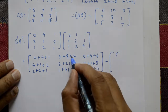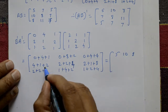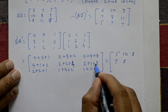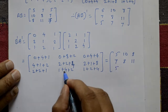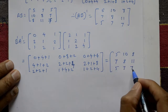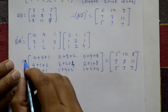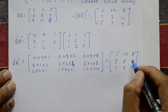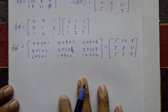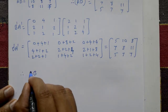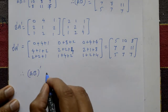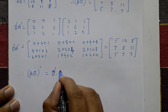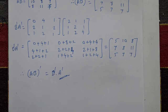Third row result is 5, 7, 7. This is B dash into A dash. Now see — both answers are the same: same order and same elements. That means A into B whole dash is equal to B dash into A dash. This is the required solution. Please subscribe to my channel, comment on this video, and please like it.